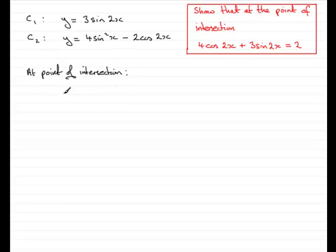At the point of intersection, we can say that 3 sine 2x has to equal 4 sine squared x minus 2 cos 2x.